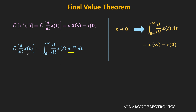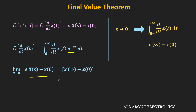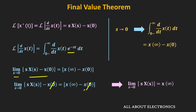So as s tends to 0, the Laplace transform of dx/dt equals x(∞) − x(0). Since the Laplace transform of dx/dt is also s·X(s) − x(0), we can write: limit s→0 of [s·X(s) − x(0)] = x(∞) − x(0). Since x(0) is independent of s, the limit applies only to s·X(s). The x(0) terms cancel, giving us x(∞) = limit s→0 of s·X(s). That is the final value theorem of the Laplace transform.